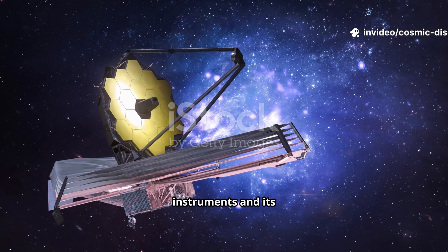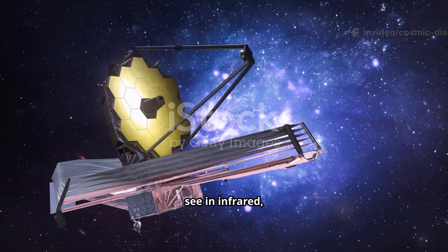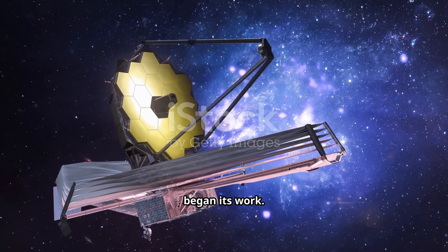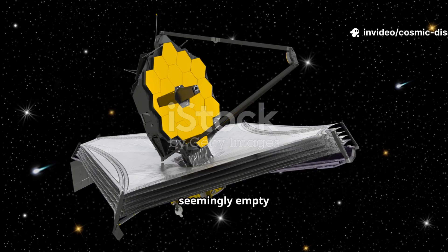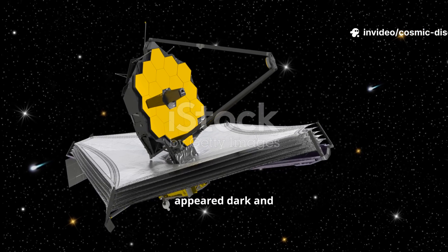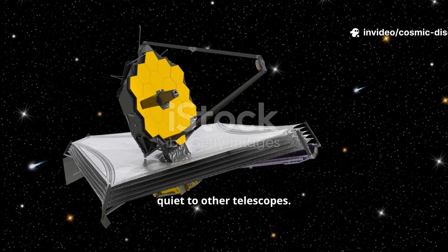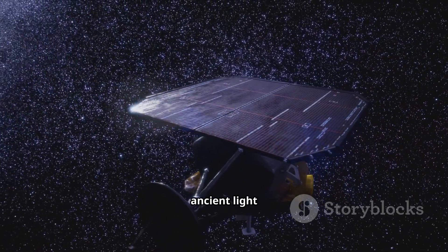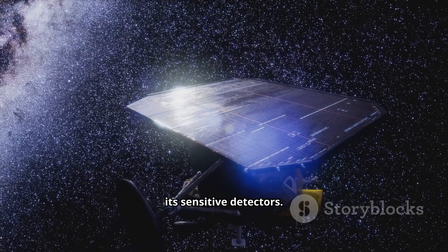With its powerful instruments and its unique ability to see in infrared, the Webb Telescope began its work. Scientists pointed it towards a seemingly empty patch of the sky, a region that appeared dark and quiet to other telescopes. They left the shutter open for hours, letting the faint ancient light slowly collect on its sensitive detectors.